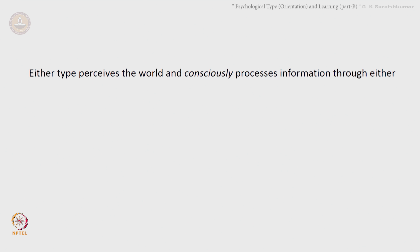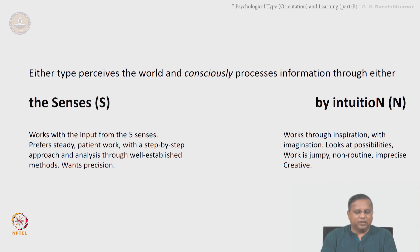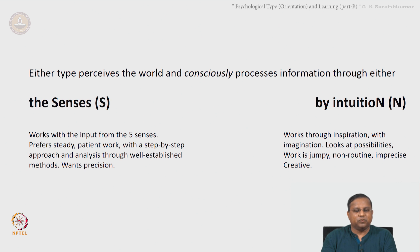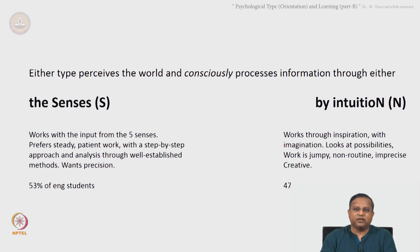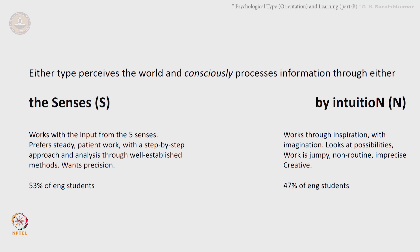Either type — extrovert or introvert — perceives the world and consciously processes information through either their senses, abbreviated as S, or by intuition, abbreviated as N. The S people work with input from the five senses, prefer steady patient work with a step-by-step approach and analysis through well-established methods. Whereas a person with an N orientation works through inspiration with imagination, looks at possibilities, and their work is jumpy, non-routine, imprecise and creative. The same study showed that 53 percent of engineering students are S type and 47 percent are N type.